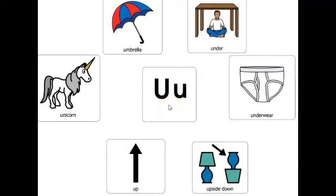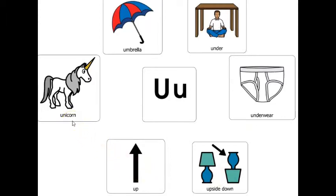Letter U makes the sound uh. Here are six words that start with the letter U. You can say them after me. Under, underwear, upside down, up, unicorn, umbrella.